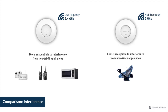For the 5 gigahertz band, weather and military radars are the most common sources of interference. The built-in DFS functionality in GWN access points helps avoid channels used by radar when one is detected in proximity. The chances of getting interference from radar are still very low. Because 5 gigahertz is less susceptible to interference, it makes it the ideal band to use in higher-capacity environments.